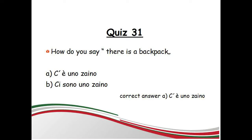In the previous lesson you have learned there is and there are. There was also a question: how do you say 'there is a backpack'? A: C'è uno zaino. B: Ci sono uno zaino. The correct answer is A — C'è uno zaino.